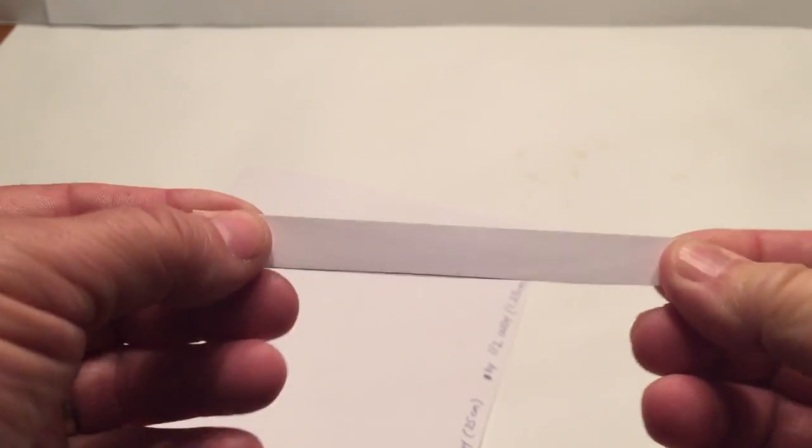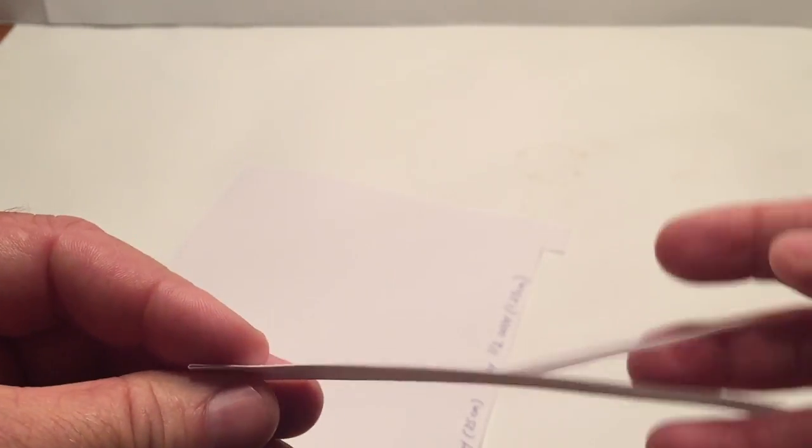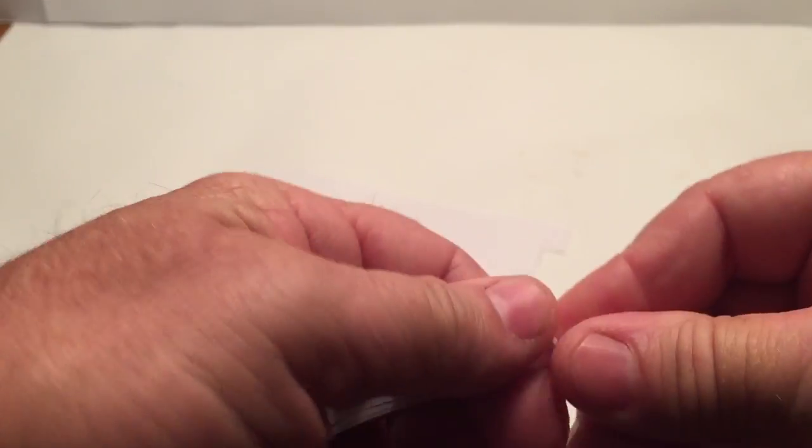Once we fold it in half, just like this, we're going to twist the paper. Just kind of give it a twist. Start at one end and just twist it around. It doesn't have to be super tight. You just want to get it twisted up.